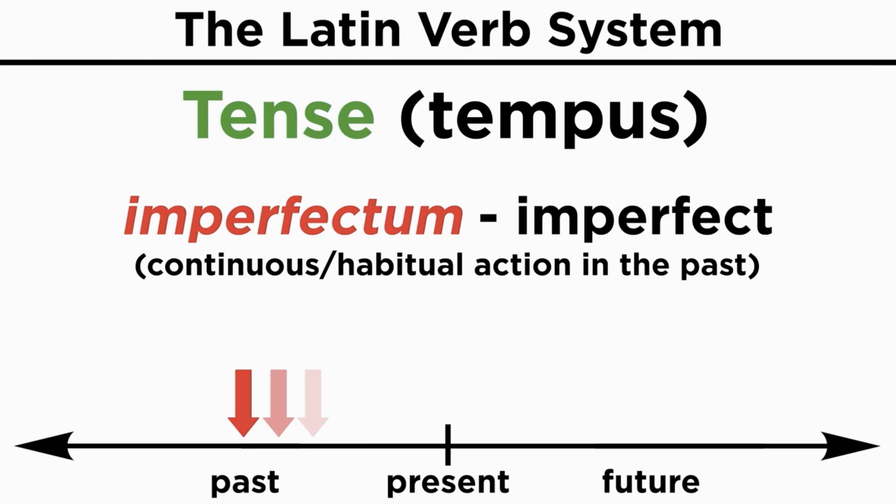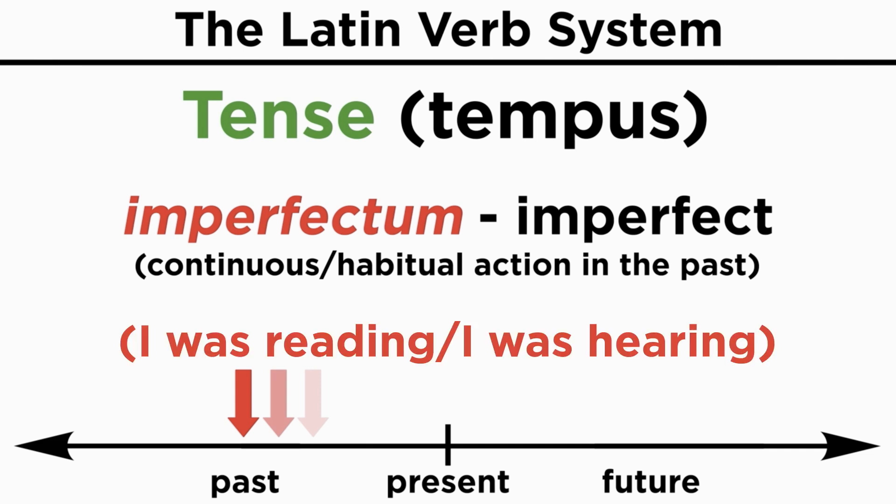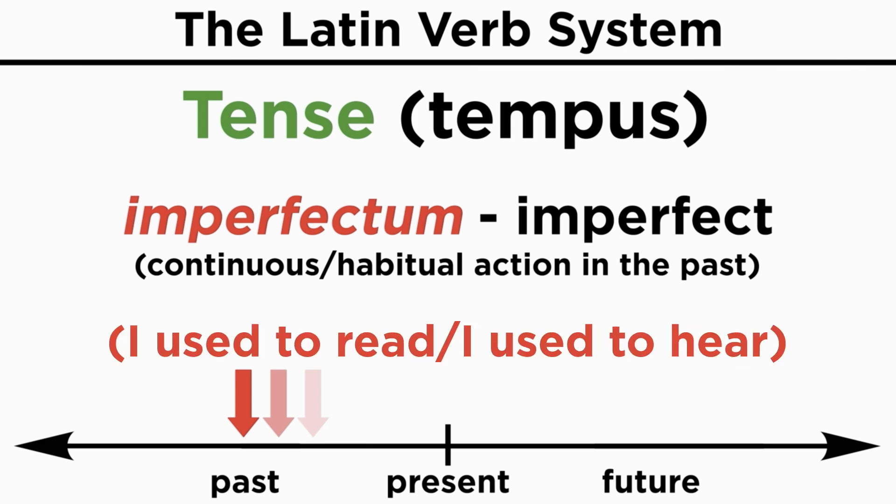As we recall, the translation will imply a progressive action in the past, like "I was reading" and "I was hearing," or a repetitive action also in the past, like "I used to read" and "I used to hear."